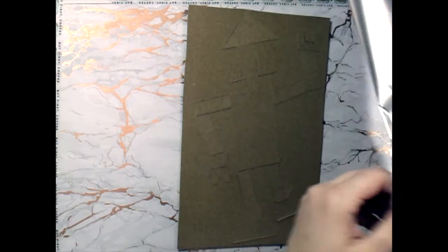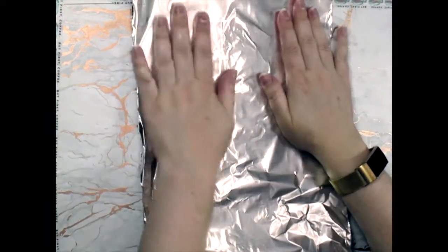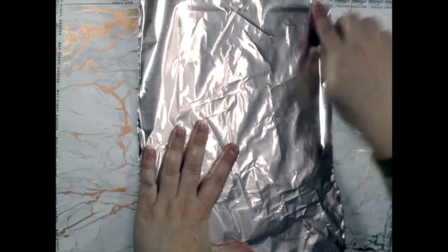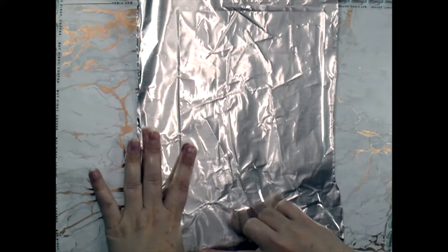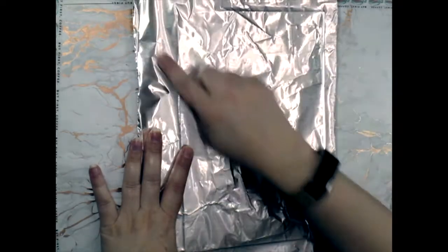I'm going to measure out the amount of tin foil I need to cover my robot. Yep, there he is. And make sure you have a little bit of edges, a little edge all along the side.